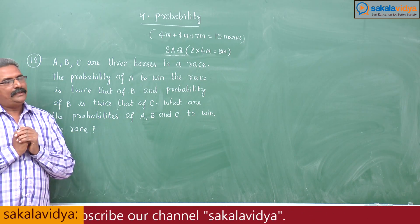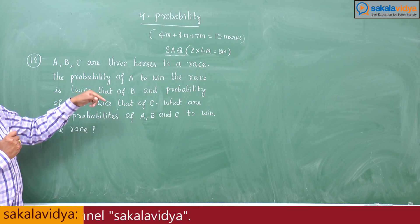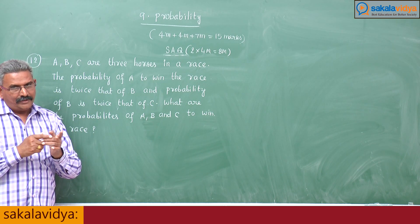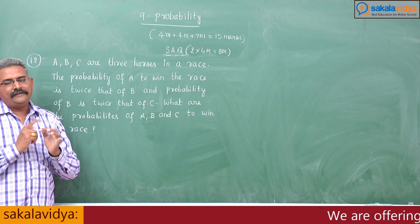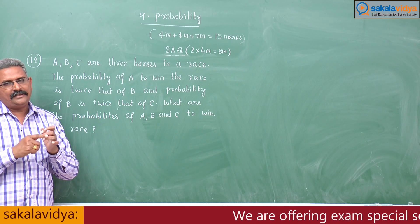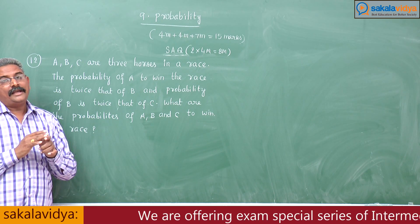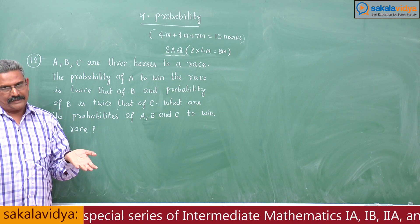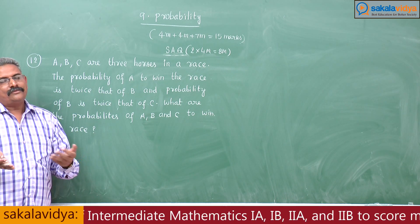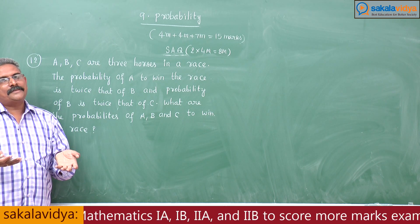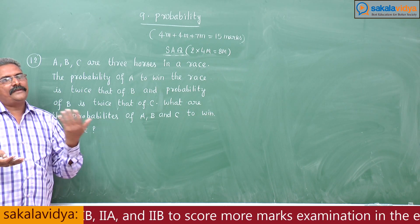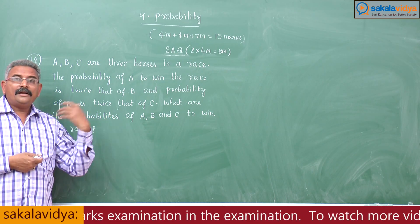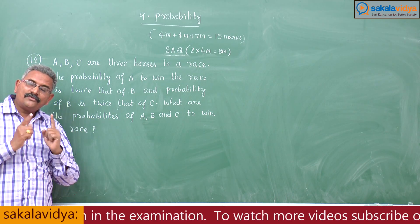And one more thing: only three horses are in that race — A, B, C. So if we suppose them as events, A event, B event, C event — they are exhaustive events. That means A union B union C is equal to the sample space. So the probability of the sample space P(S) equals 1. That means in this problem, P(A union B union C) becomes 1.